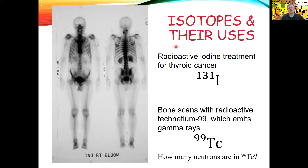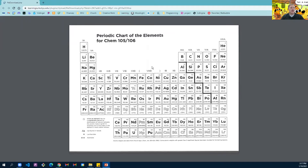If I ask how many neutrons are in technetium-99, you'd pull out your periodic table and find technetium — symbol Tc, atomic number 43. So technetium has 43 protons. For technetium-99: take 99 minus 43 and get 56. There are 56 neutrons in technetium-99.